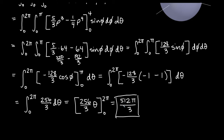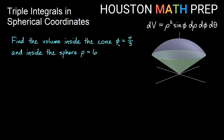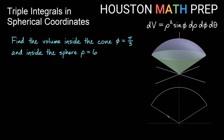Next, find the volume inside the cone phi = pi/3 and inside the sphere rho = 6. In the picture, the sphere rho = 6 forms the top and the cone phi = pi/3 is the boundary below, with the cone angle measured pi/3 downward from the z-axis and the sphere at radius 6 from the origin. We set up a triple integral of just dV.